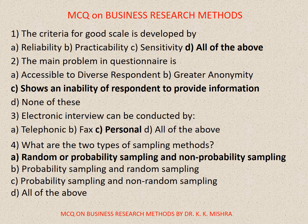Question number 4. What are the two types of sampling methods? Options are: A. Random or probability sampling and non-probability sampling, B. Probability sampling and random sampling, C. Probability sampling and non-random sampling, D. All of the above. Correct option is A: Random or probability sampling and non-probability sampling.